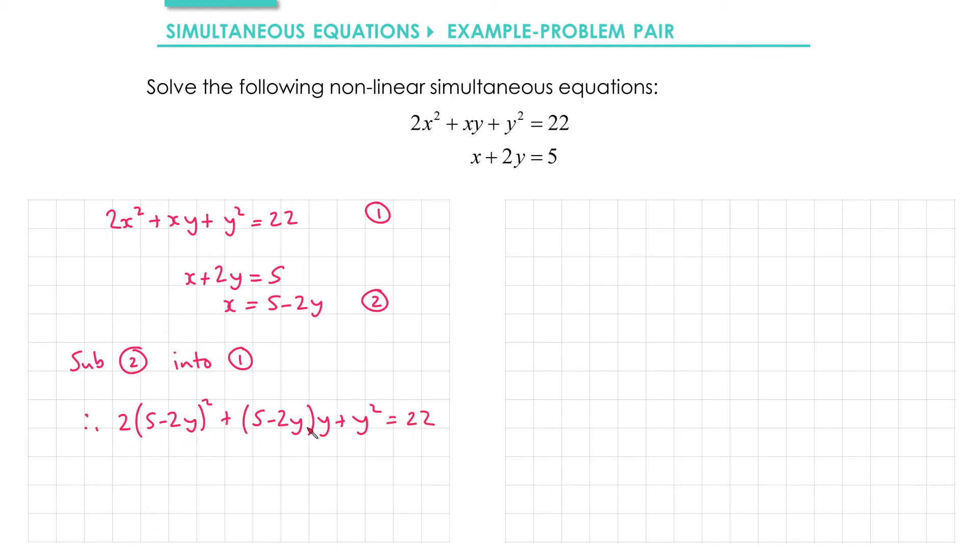Next up we'll expand out these brackets here. We'll leave the 2 on the outside, we're going to get 5², which is 25. Multiplying these together gives us negative 10y, then double it, that gives us minus 20y. Squaring minus 2y gives us positive 4y². Then we'll expand these brackets, it's already positive, we're going to do 5 times y, so plus 5y, then we've got minus 2y times y gives us minus 2y². We have plus y² equals 22.